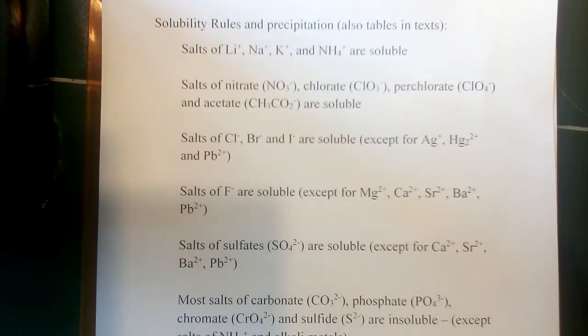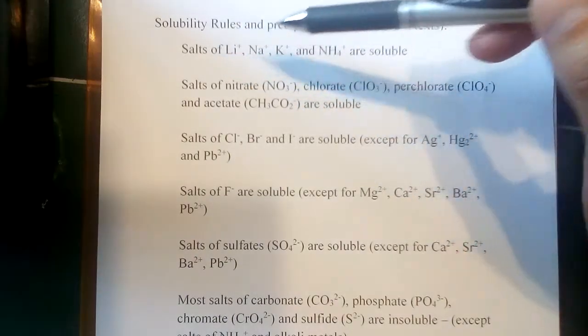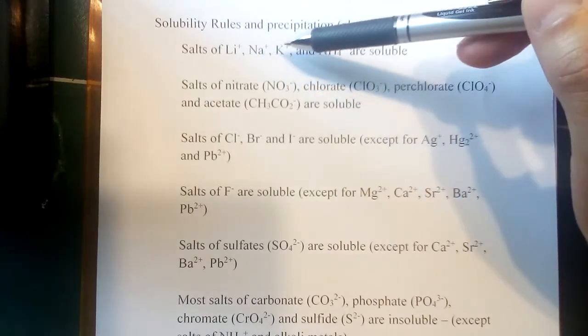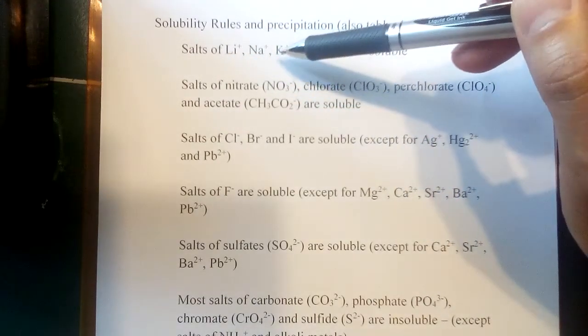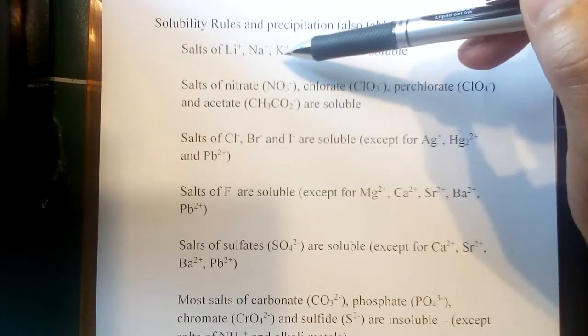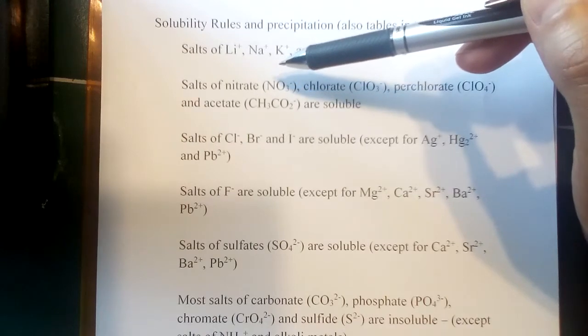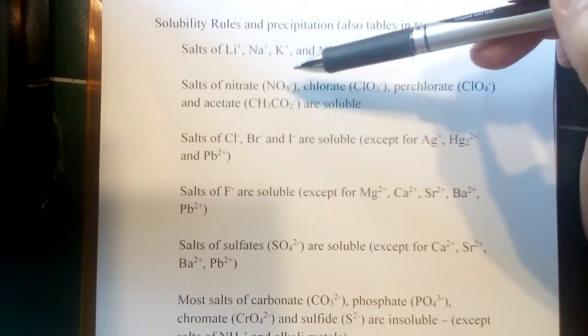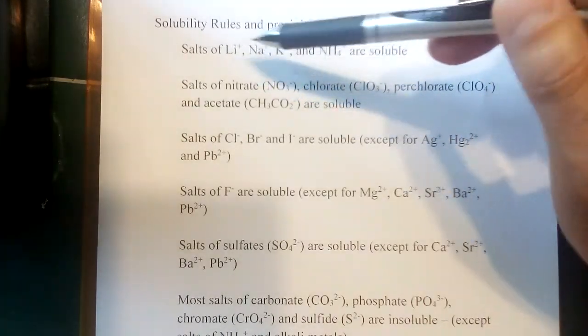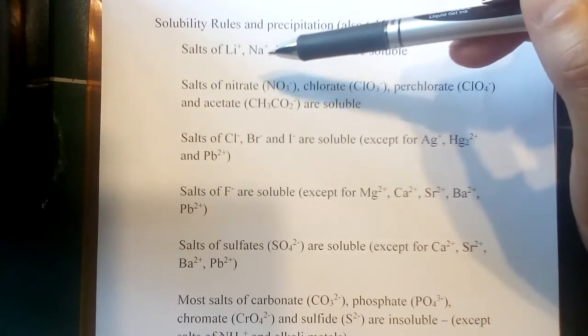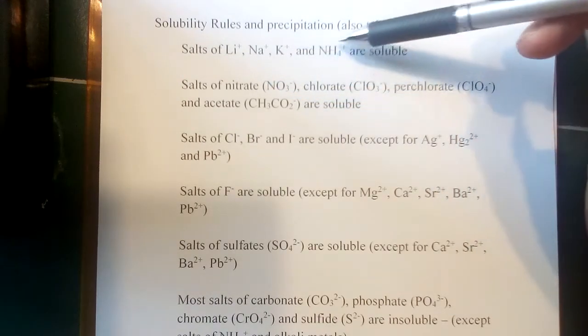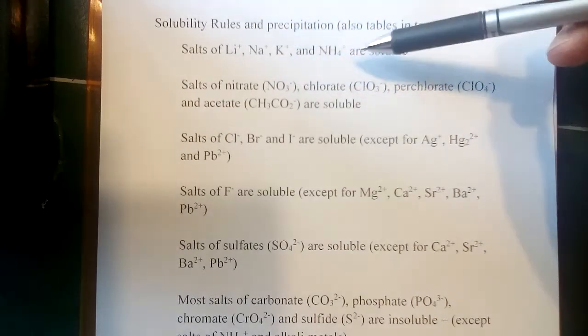So any salt where the cation is lithium, sodium, potassium - in fact, this is the first column of the periodic table, so this would apply to rubidium, cesium, and francium as well, they're just not used very often in a laboratory setting - but lithium, sodium, potassium, rubidium, cesium, any first column metal ion, or ammonium, the polyatomic ion cation we've talked about, any salt with those cations is always going to be soluble.